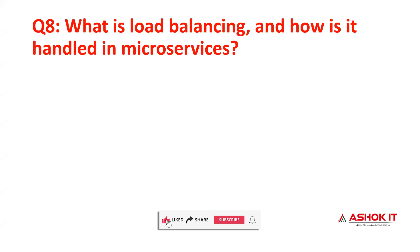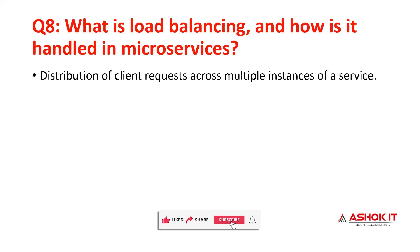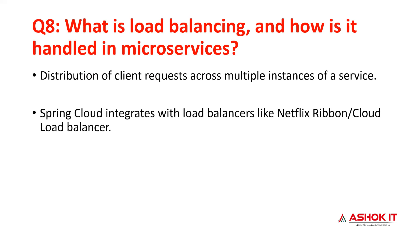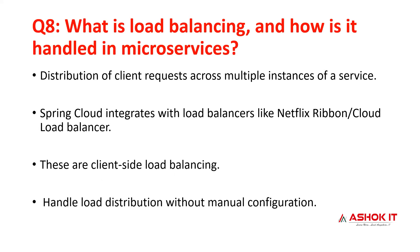Question 8: what is load balancing and how is it handled in microservices? If a service is running multiple instances and a client makes repeated requests, those requests should be distributed to all instances equally — that is distribution of client requests. Spring Cloud supports load balancing via Netflix Ribbon (legacy) or Spring Cloud LoadBalancer (current). This is client-side load balancing, where the calling microservice handles load distribution. No manual configuration is needed; it auto-configures.